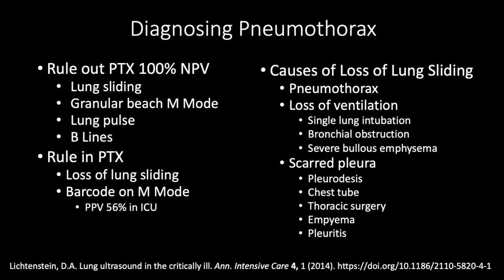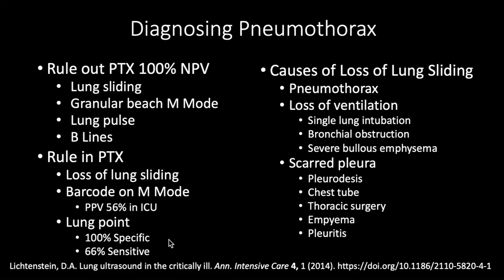Is there anything more specific for pneumothorax? Lung point — finding that intersection of lung and pneumothorax — is very specific, but it's hard to find. Even if you look thoroughly rib space by rib space, you only pick it up two-thirds of the time. So the specificity of loss of lung sliding alone is not great, but it's a nice way to rule out pneumothorax. I wouldn't just throw a chest tube in a patient with loss of lung sliding alone; confirm it's truly a pneumothorax before proceeding if the patient is clinically stable.